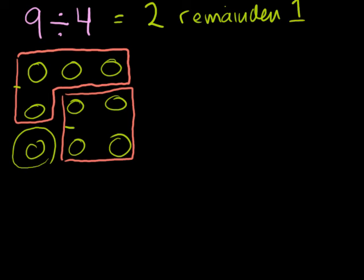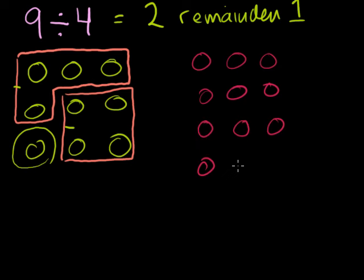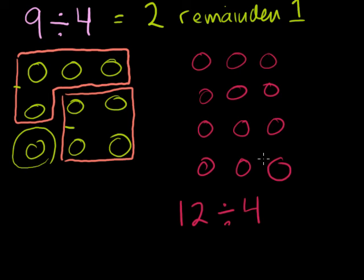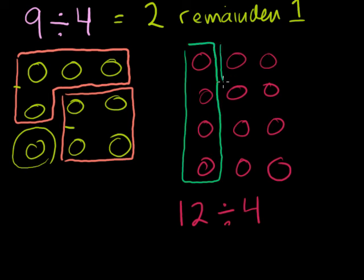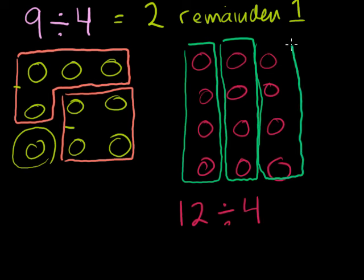If I asked what twelve divided by four is — let me draw twelve objects: one, two, three, four, five, six, seven, eight, nine, ten, eleven, twelve. I want to divide these into groups of four: here's one group of four, another group of four, and a third group of four. There's nothing left over — I can exactly divide twelve into three groups of four. So twelve divided by four equals three.